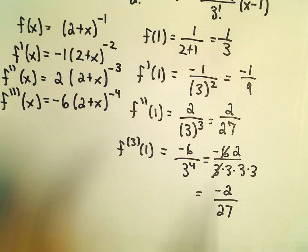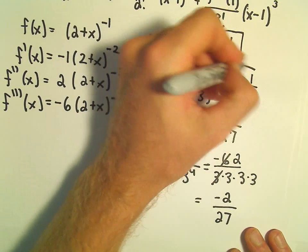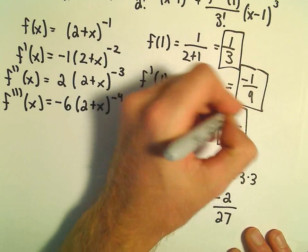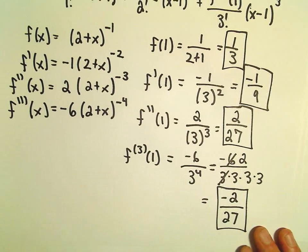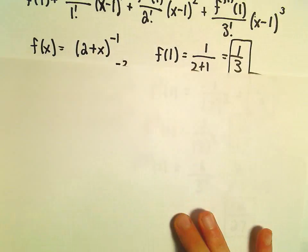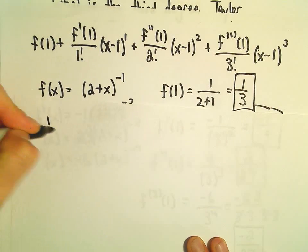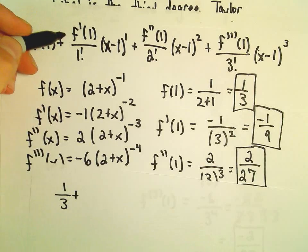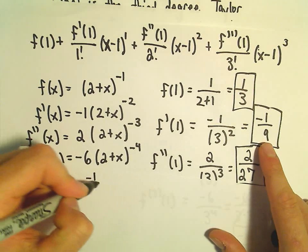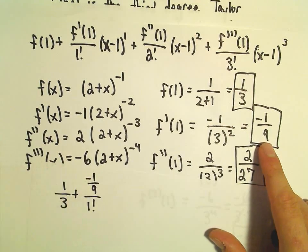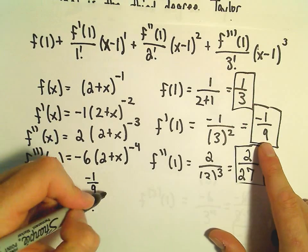Now I'm just going to go back in and fill in our formula with these numbers. We can just reduce the factorials. So we'll get f of 1, which is just equal to 1 third. f prime of 1, that's negative 1 ninth over 1 factorial times x minus 1 to the 1st.